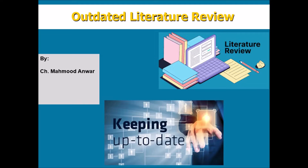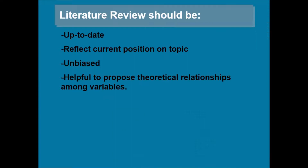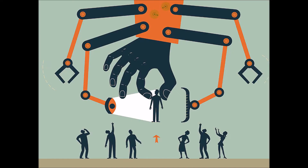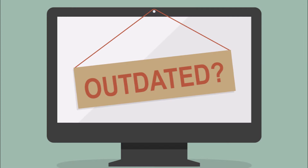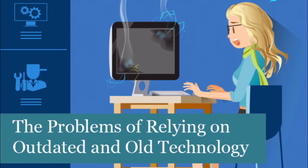The topic is outdated literature review. Literature review is an essential component of research, and whenever you write a research article, literature review is a very significant component. Your literature review should be up to date. It should reflect the current position on your topic — the hypothesized relationships should represent the current understanding about the topic, be unbiased, and be helpful to propose theoretical relationships among variables. Today I will provide a sample article to show the main issue of outdated literature and how you can avoid it while writing your research paper.